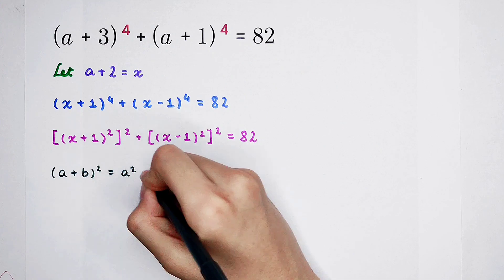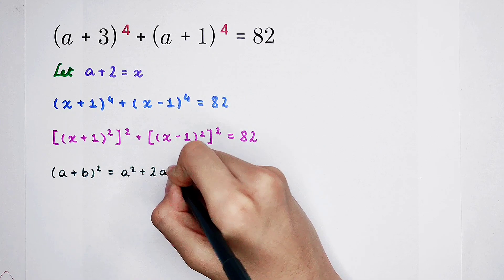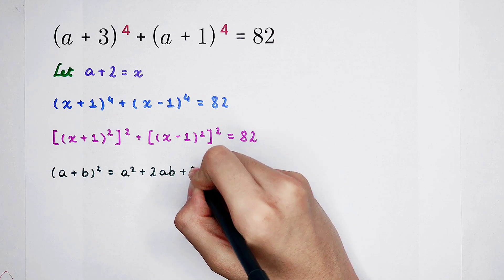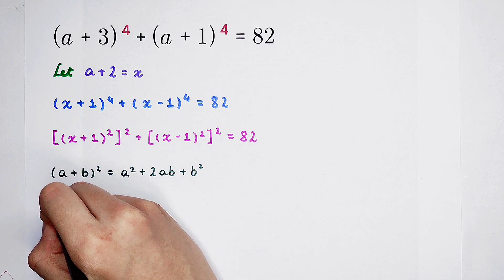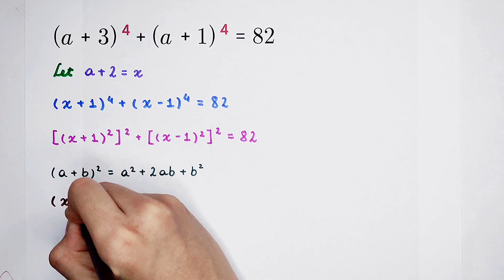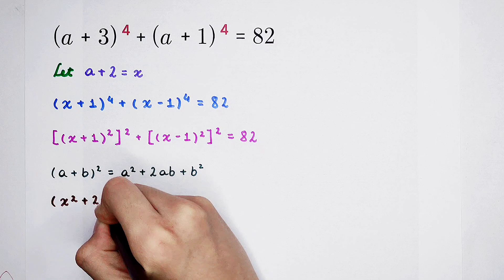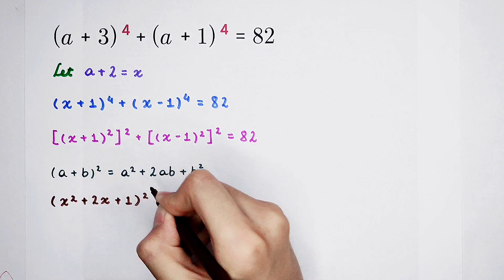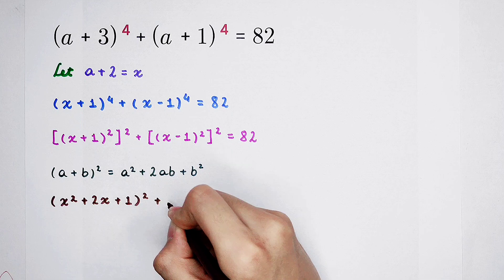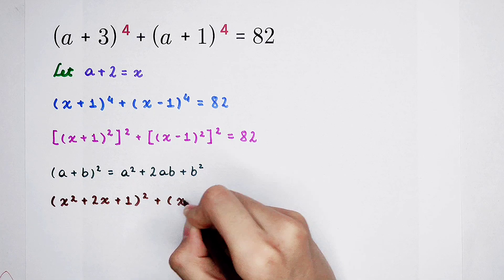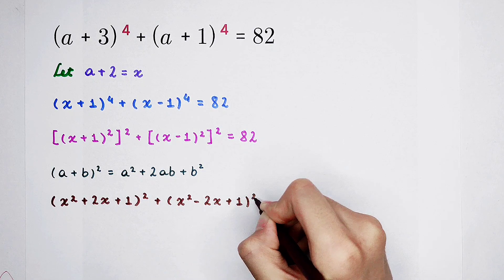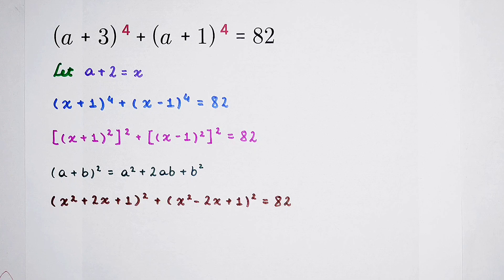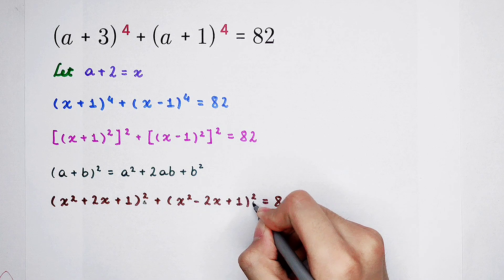It is A squared plus 2AB plus B squared. So then, x plus 1 all squared is x squared plus 2x plus 1, and then all squared. And then plus x minus 1 all squared, which is x squared minus 2x plus 1 all squared. Our problem is squared. Another formula we should use.